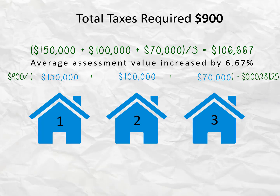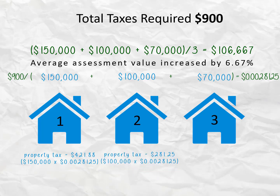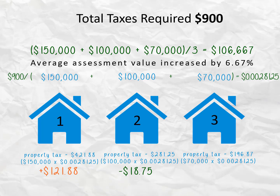That means in year two, house one will pay $421.88 in taxes, house two will pay $281.25, and house three will pay $196.87. The county still collects the same $900 needed for the taxing district's budgets, but house one will now pay $121.88 more, house two will pay $18.75 less, and house three will pay $103.13 less in taxes compared to year one.